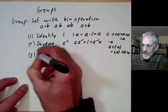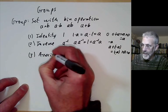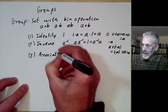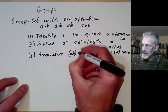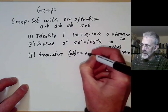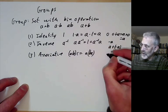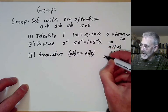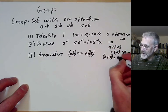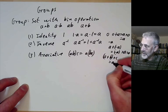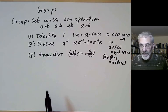And thirdly, it's associative, which just means a times b times c equals a times bc. Or additively, a plus b plus c equals a plus b plus c.